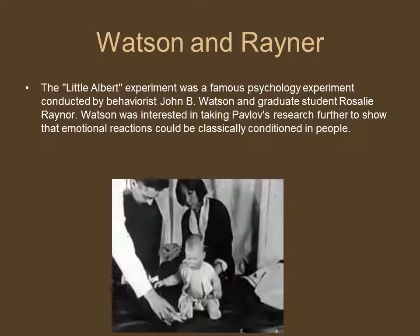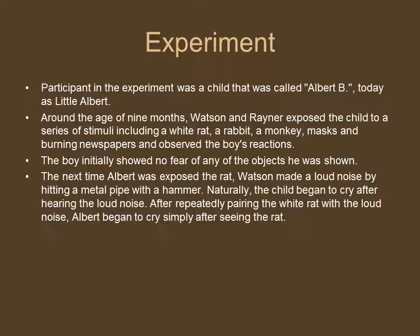The Watson experiment is known as the Little Albert experiment. It was a famous psychology experiment conducted by behaviorist John Watson and his graduate student Rosalie Raynor. Watson was interested in taking Pavlov's research further to show that emotional reactions — like fear — could be classically conditioned. The participant was a child called Albert B, known today as Little Albert, who was around nine months old. Watson and Raynor exposed the child to a series of stimuli including a white rat, rabbit, monkey, masks, and burning newspapers, and observed his reactions.